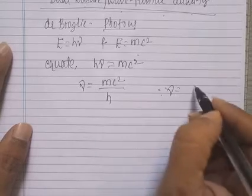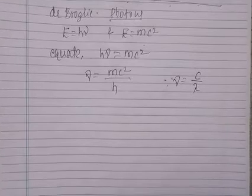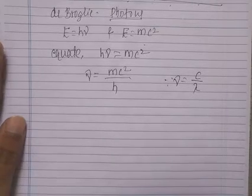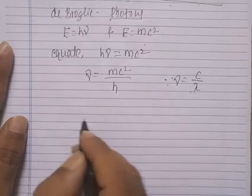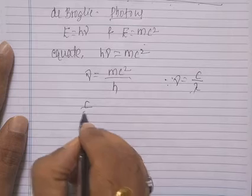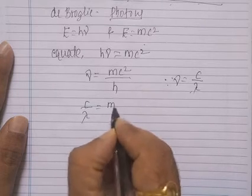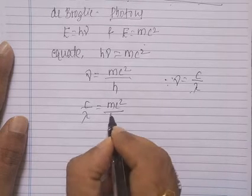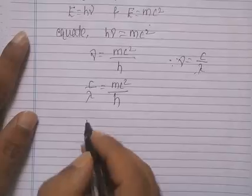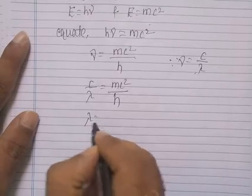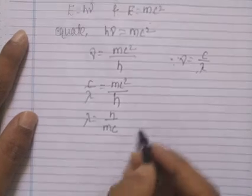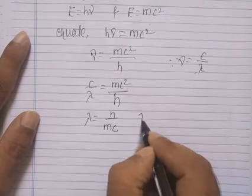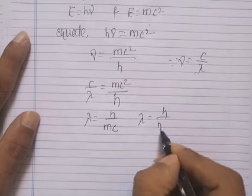From hν = mc², we get ν = mc²/h. We know that ν = c/λ — the relationship between wavelength, velocity of light, and frequency. So c/λ = mc²/h, which gives λ = h/mc. Since c is the velocity of light, we can also write it as λ = h/mv.